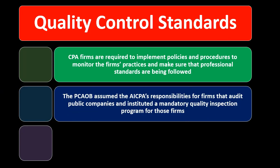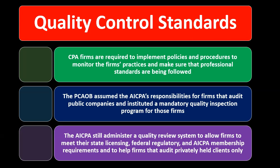The PCAOB assumed the AICPA's responsibilities for firms that audit public companies and instituted a mandatory quality inspection program for those firms. In other words, the AICPA was involved with quality control, then the PCAOB came into place and assumed that responsibility for public companies — those that are publicly traded — along with the mandatory quality inspection program for firms auditing public companies.